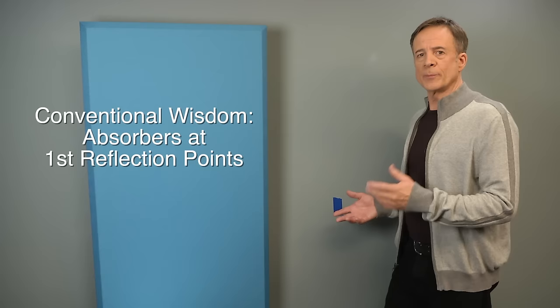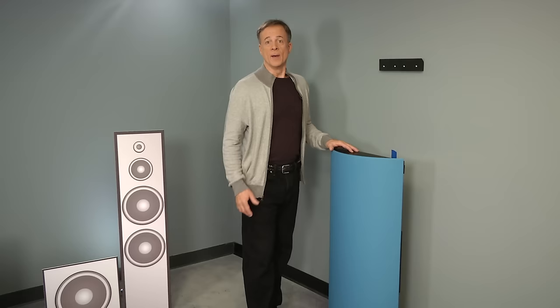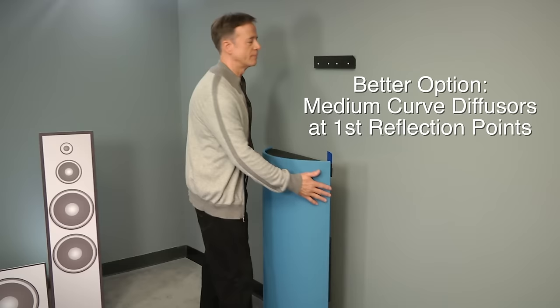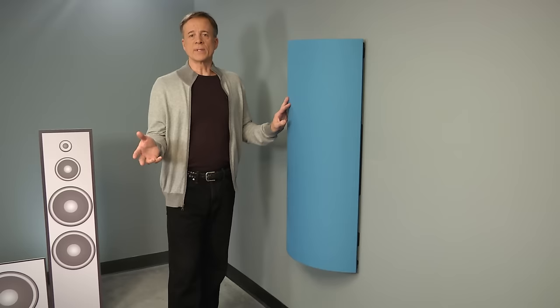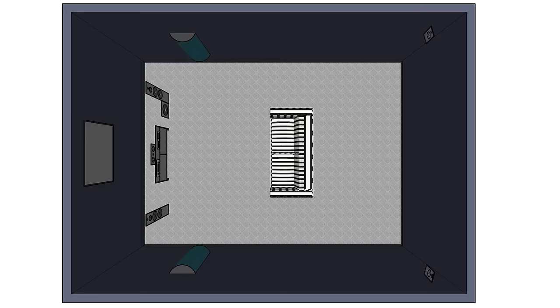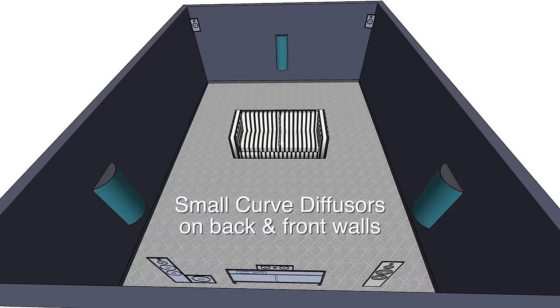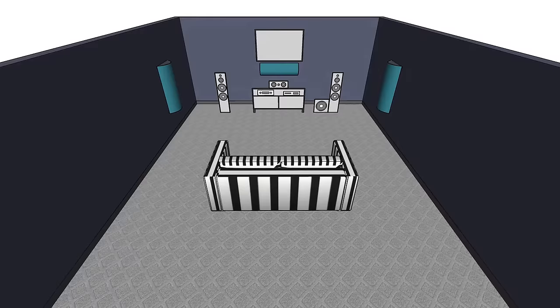Which panels go there? Lots of people put absorber panels in their first reflection points, and that's okay. But a better option is to use our medium curved diffusers in those pesky first reflection points — it'll make your stereo soundstage wider and more focused because our diffusers are phase coherent. Flat surface reflections happen on all four walls, so let's place one small curved diffuser on the back wall and one on the front wall. We've mounted the front wall diffuser horizontally because sound moves in three dimensions and it fits with the TV.